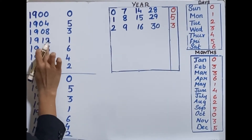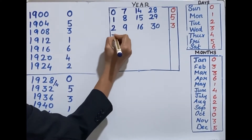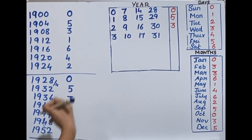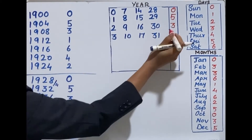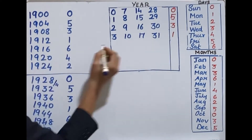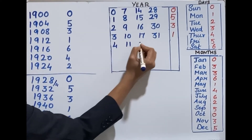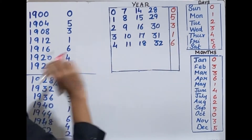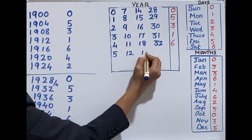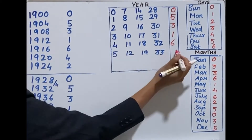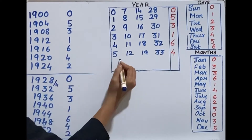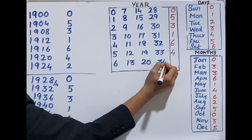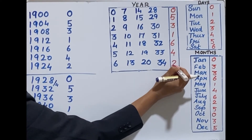If the quotient is 3, 10, 17, or 31, the corresponding value is 1. If the quotient is 4, 11, 18, or 32, the value is 6. If it is 5, 12, 19, or 33, the value is 4. If it is 6, 13, 20, or 34, the value is 2.